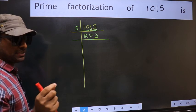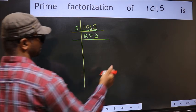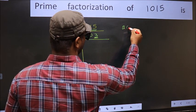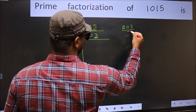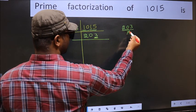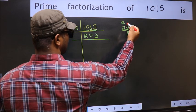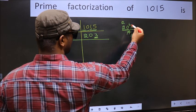Next, prime number 7. Let us check divisibility by 7. 203 by 7. Our number close to 20 in 7 table is 7 times 2, 14. 20 minus 14, 6.